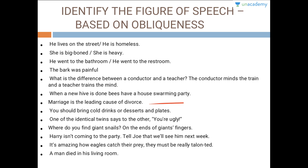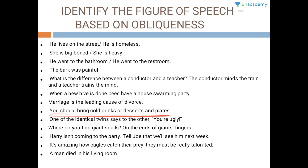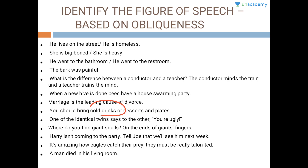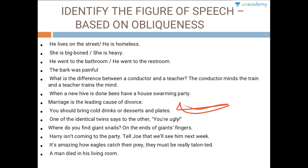Marriage is the leading cause of divorce — this is an example of irony because it's a contradictory statement. You should bring cold rings or desserts in plates — this is an example of ambiguity; we are not sure whether the person has to bring cold rings with desserts, or cold rings with plates, or desserts in plates.